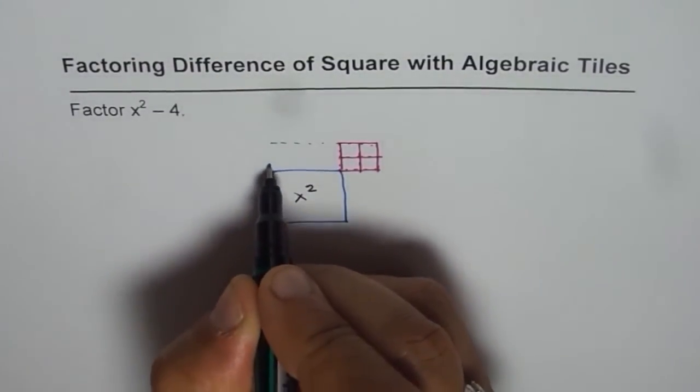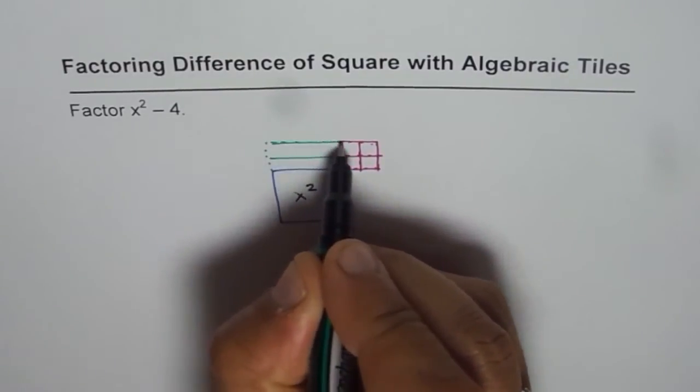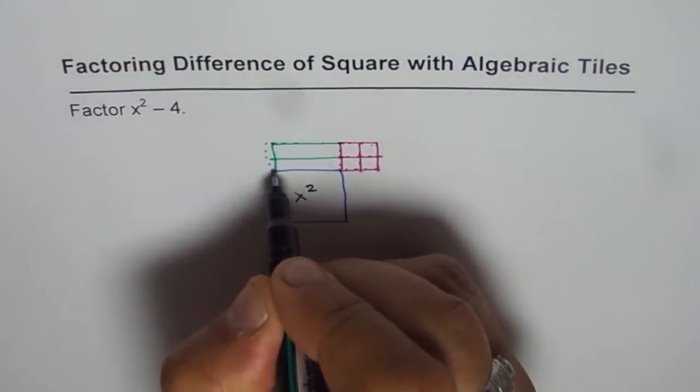So how many x tiles should I add? There are 2 x tiles which should be added. So these are the 2 x tiles which I am adding.